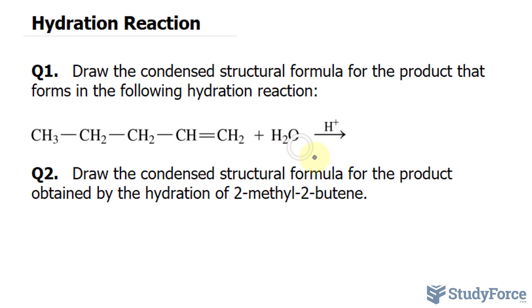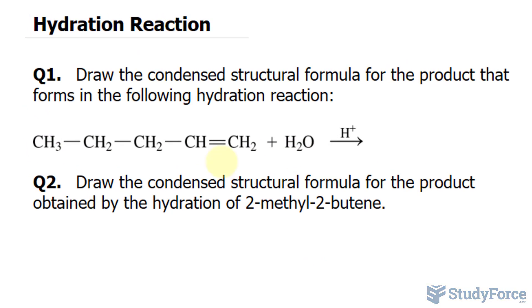Notice that this hydrocarbon is asymmetrical. It is an alkene. It has this double bond, but it's not found in the middle. It's found on this side of the molecule. So for asymmetrical alkenes, the hydrogen from water adds to the carbon with the greater number of hydrogen atoms, and the OH adds to the carbon with the fewer number of hydrogen atoms.